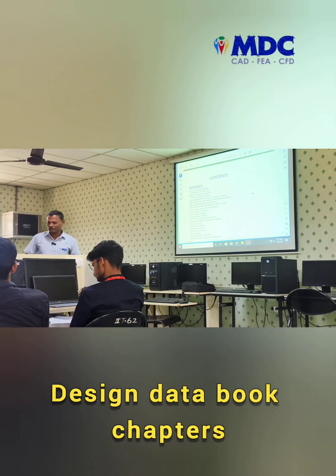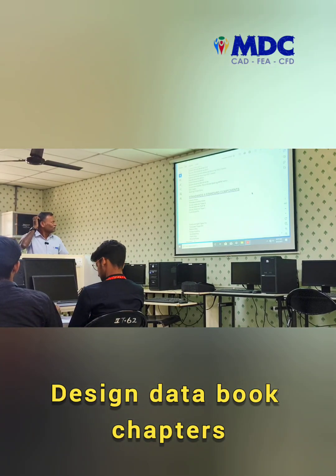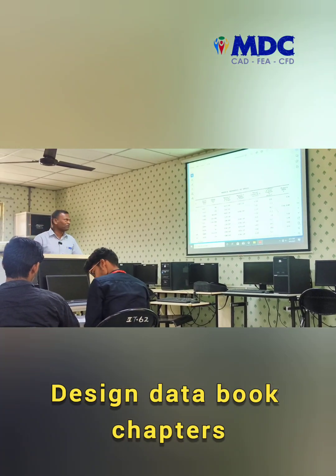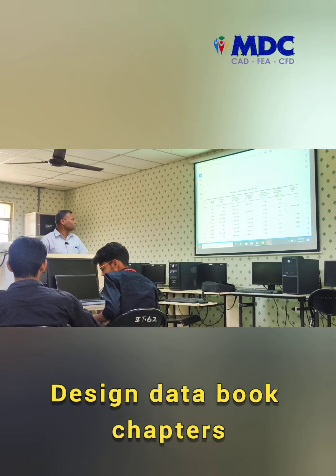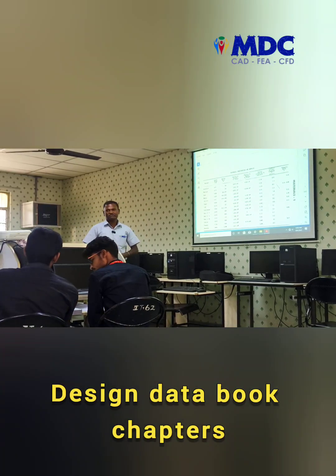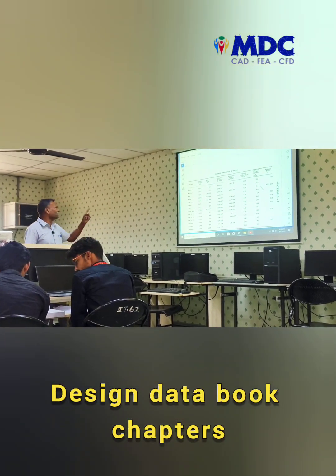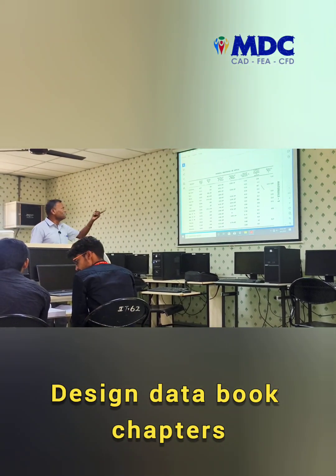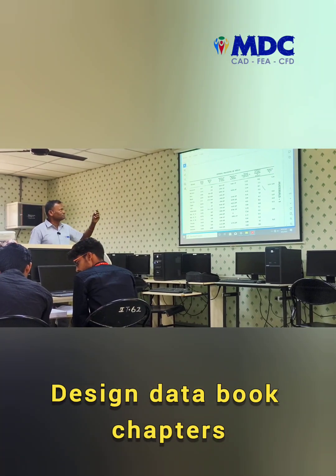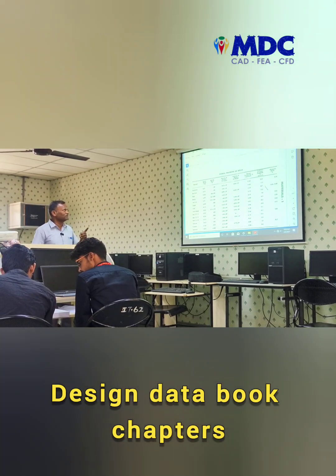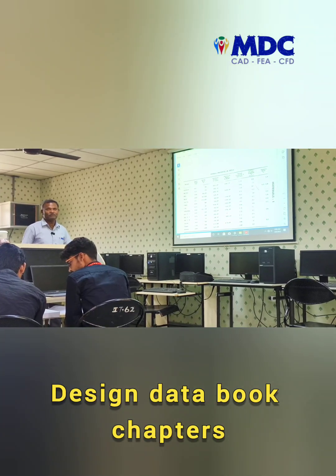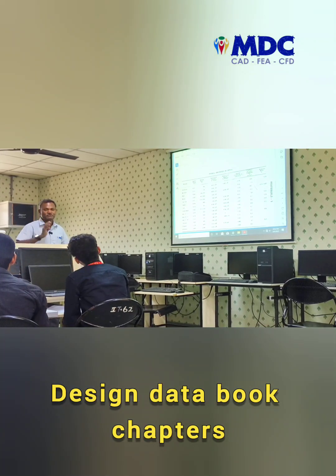Page number 1.1 — look at the physical properties, mostly physical properties of the material. This is the physical properties of the material: specific weight, melting point, modulus of elasticity, rigidity, thermal conductivity, coefficient of linear expansion, and Poisson's ratio. This is the first part of the material. This is easy for you.